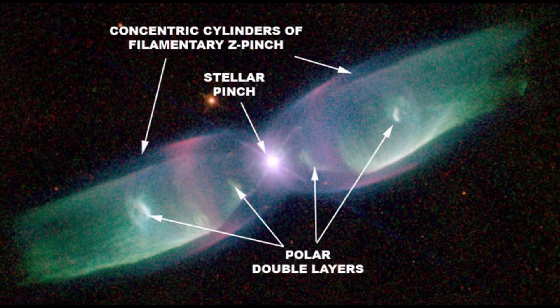Ions moving through the magnetic field are squeezed toward the axis. Plasma physicists refer to this as the Bennett Pinch, or Z-Pinch. For example, the planetary nebula M2-9 shows the classic hourglass Z-Pinch shape.